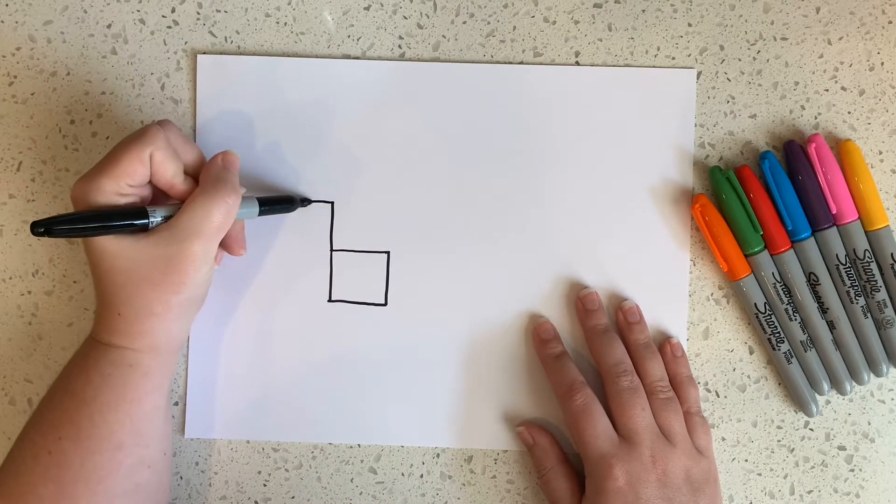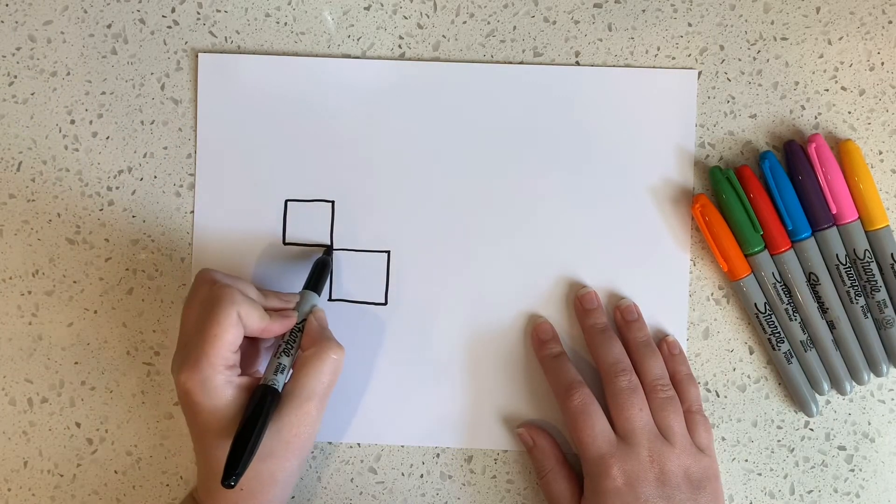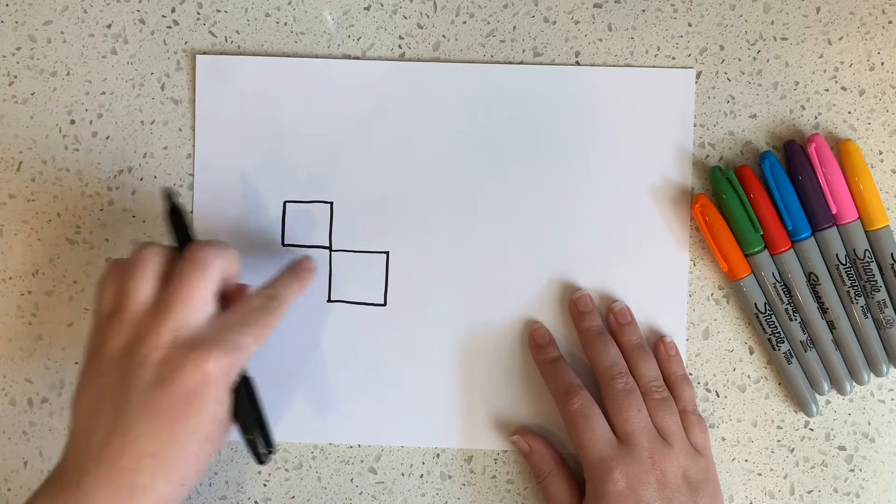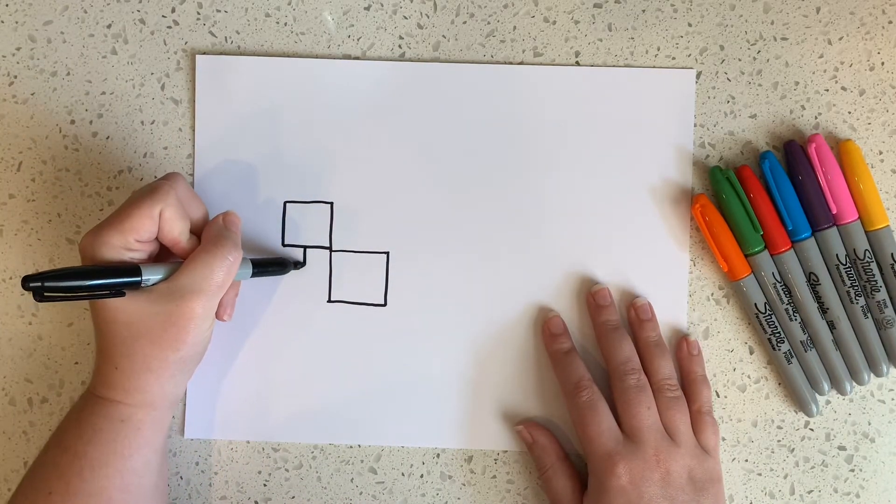So squares are a little different than rectangles, right? They have the same length on each side. So do your best and see how many squares you can make.